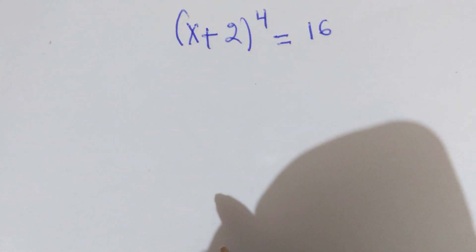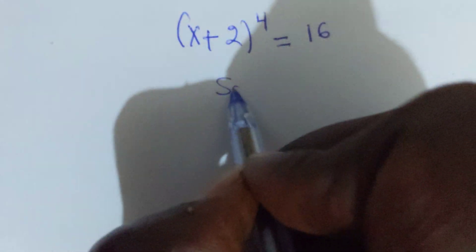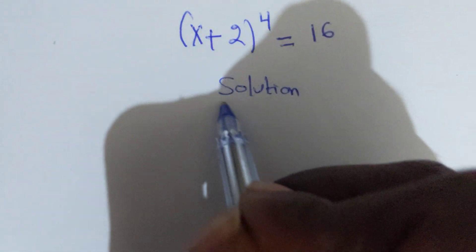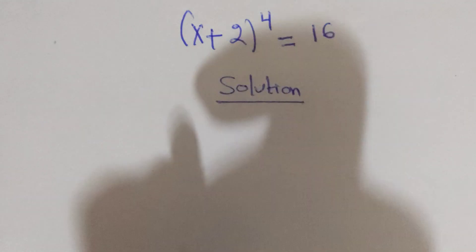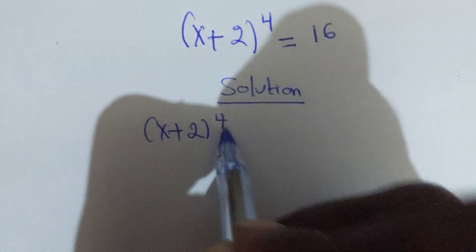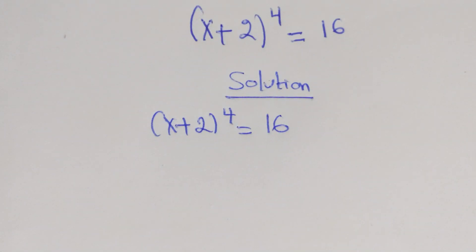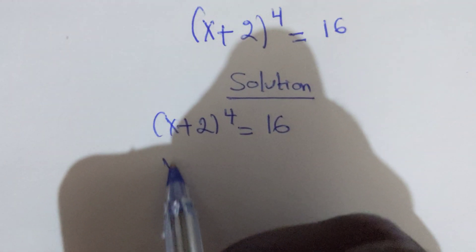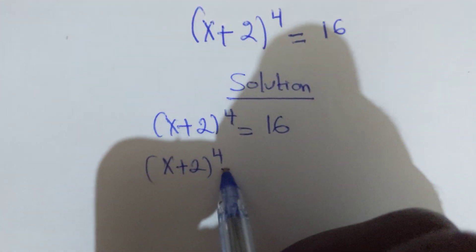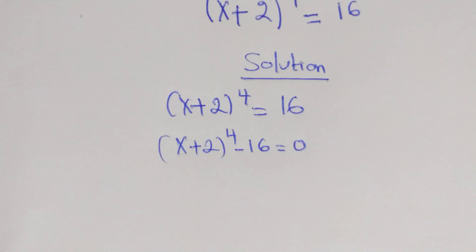Hello everyone, welcome to my YouTube channel. Now let's provide the solution. Here we have (x + 2)⁴ which equals 16. We can rewrite this as (x + 2)⁴ minus 16, which equals zero.